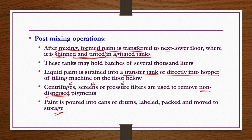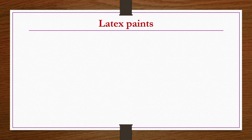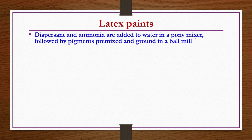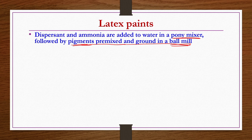For latex paint manufacture, dispersant and ammonia are added to water in a pony mixer, followed by pigments pre-mixed and ground in a ball mill. In this process, again only mixing takes place. Different types of pigments are pre-mixed and ground in a ball mill, then added to the pony mixer — a small batch-type mixer — in which dispersant and ammonia are already present.